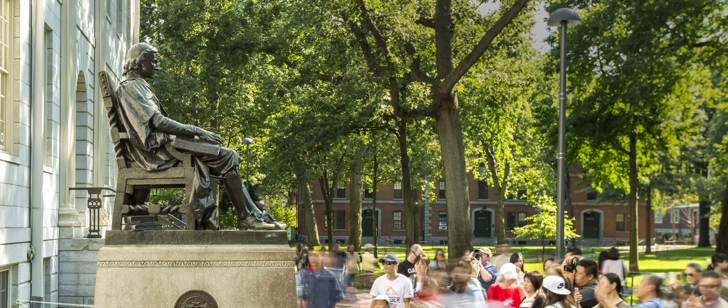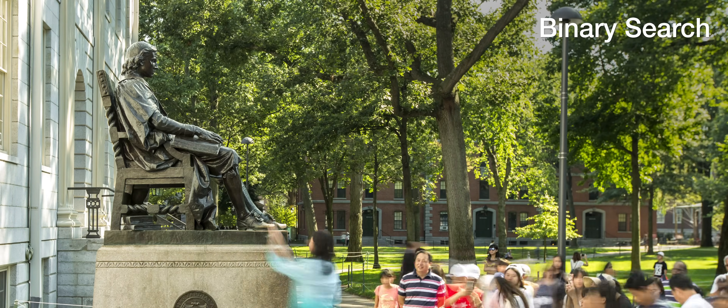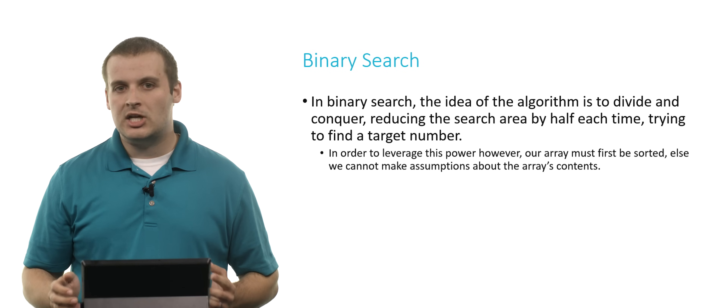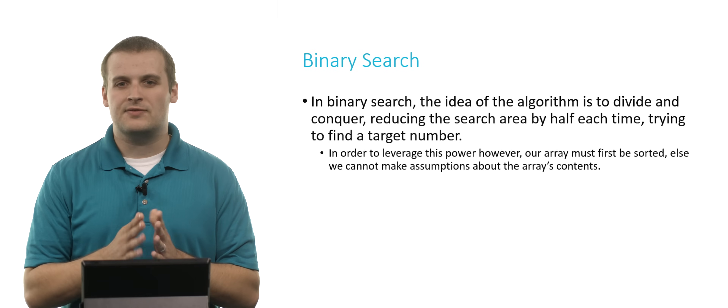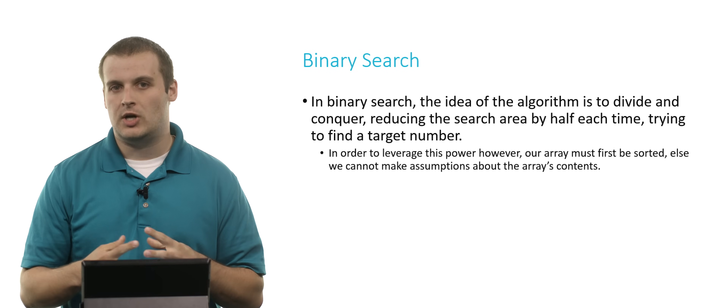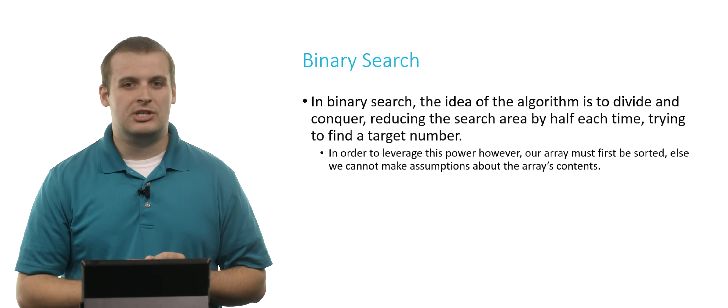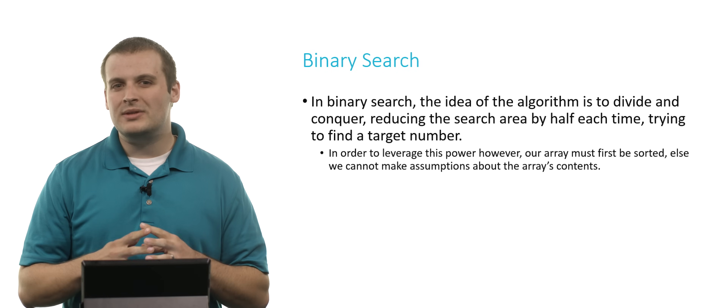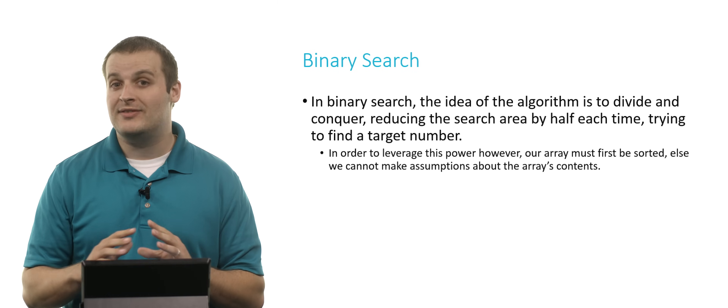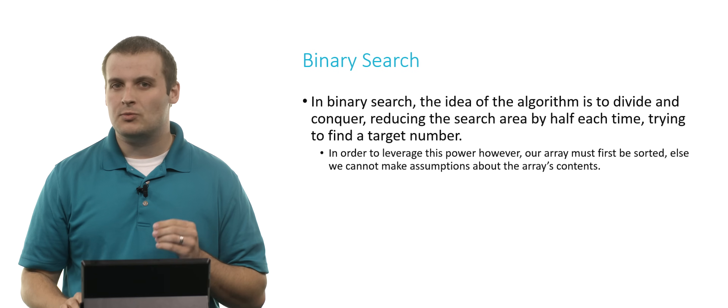Binary search is an algorithm we can use to find an element inside of an array. Unlike linear search, it requires a special condition be met beforehand, but it's so much more efficient if that condition is met. The idea is divide and conquer — we want to reduce the size of the search area by half each time in order to find a target number. We can only leverage the power of eliminating half of the elements without even looking at them if the array is sorted.